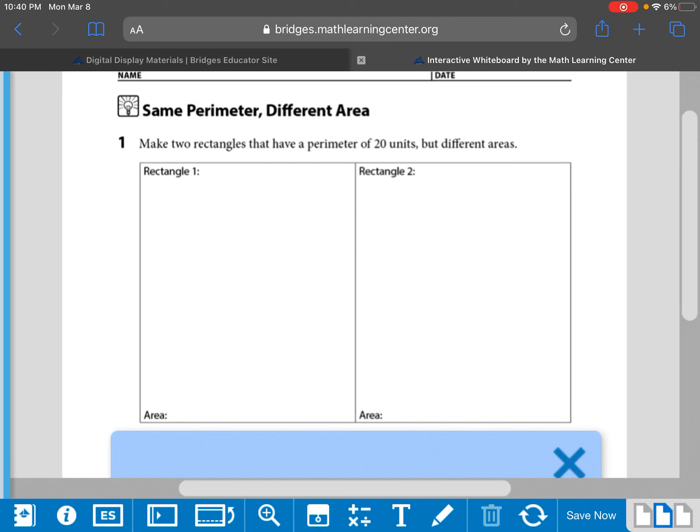Hey 3rd grade, we are going to do the first problem on this same perimeter, different area page. This problem says make two rectangles that have a perimeter of 20 units but different areas.